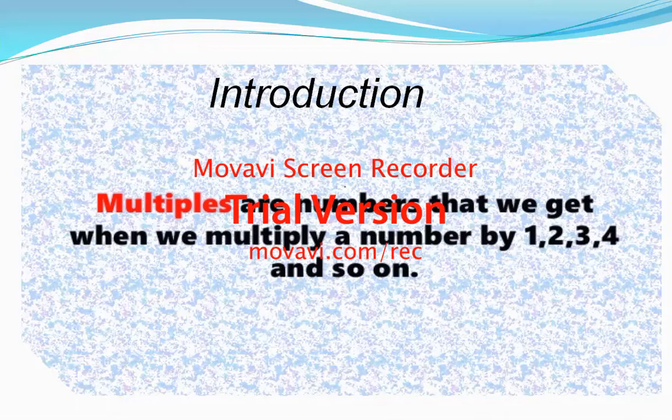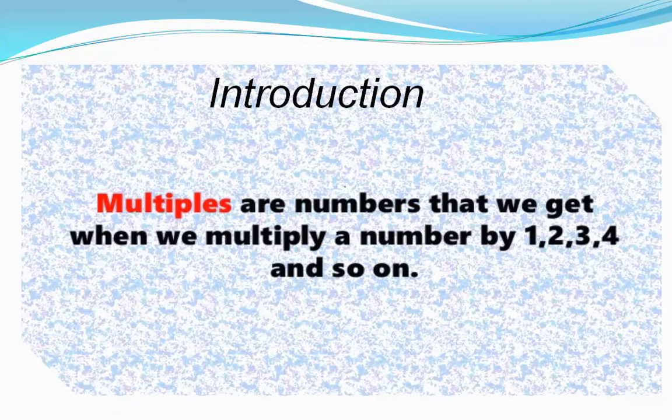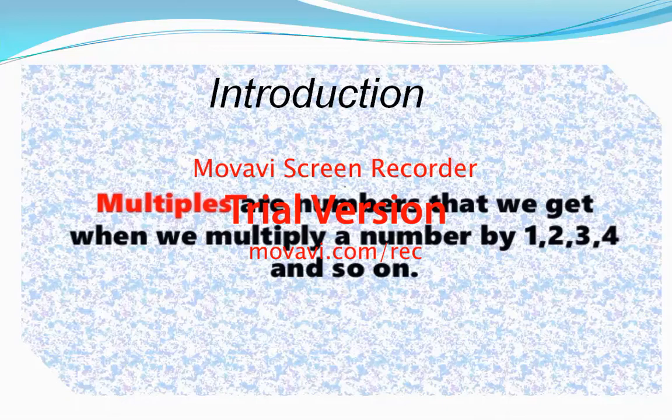Multiples are some numbers that we get when we multiply a number. For example, one times, two times, three times, four times - when you multiply these numbers, the resulting numbers are called multiples.